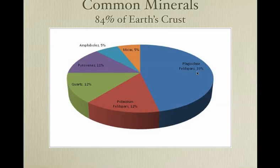These are the most common minerals. Plagioclase feldspars are 39% of Earth. Potassium feldspars, otherwise known as K-feldspars, are about 12%. Quartz, 12%. Pyroxene, 11%. Amphiboles, 5%. Micas, 5%. You add this together and these few minerals make up 84% of Earth's crust.